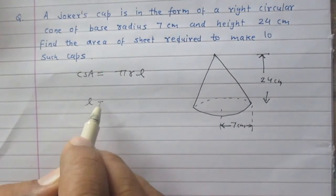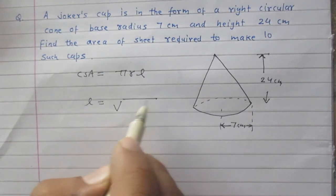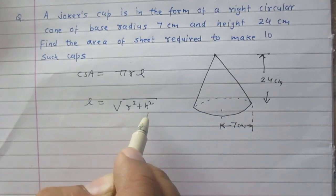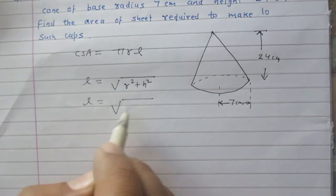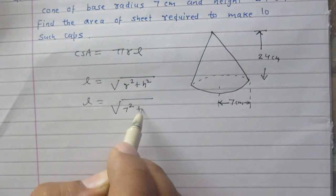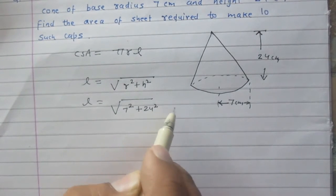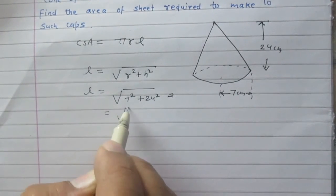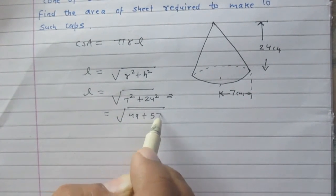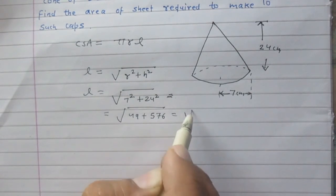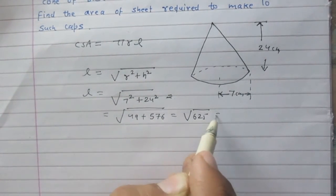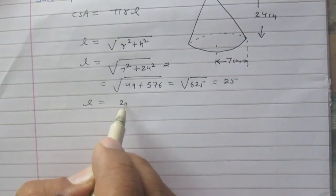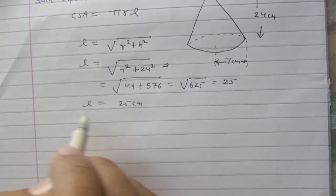According to the formula, slant height of the cone is L = √(R² + H²). So it is √(7² + 24²). After calculation you will get 49 + 576, and then √625, which is 25. So slant height of this cone is 25 cm.